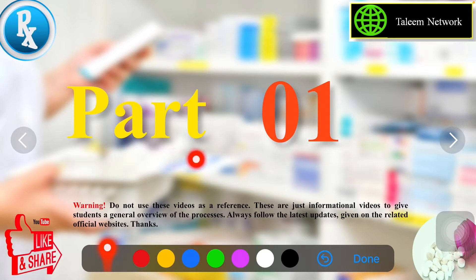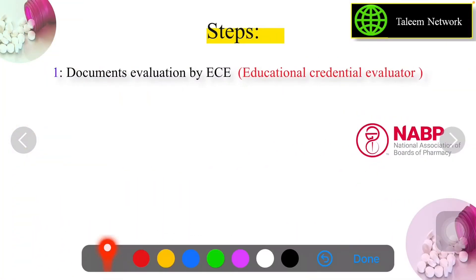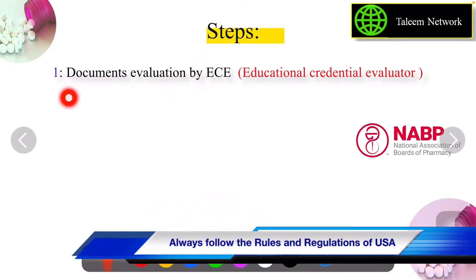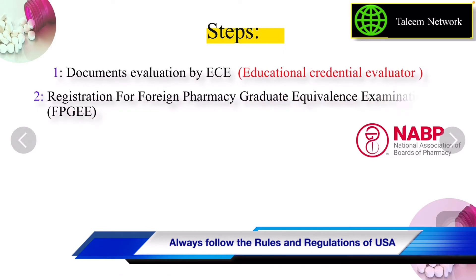The first step is related to the evaluation of your documents by ECE. ECE is the Educational Credential Evaluator — a US-based organization. You send your documents to ECE and then ECE will evaluate whether your degree is equivalent to the American bachelor's degree of pharmacy or not. Once you get your ECE report, you can apply for the second step.